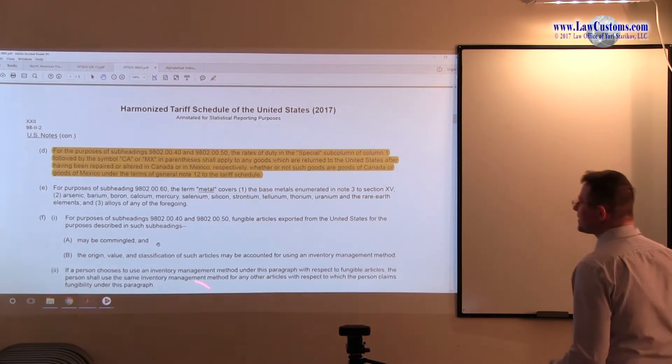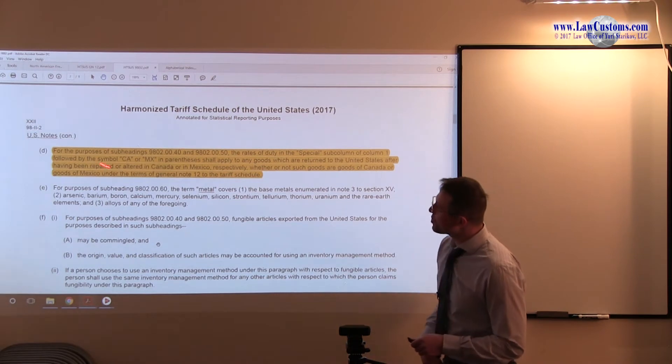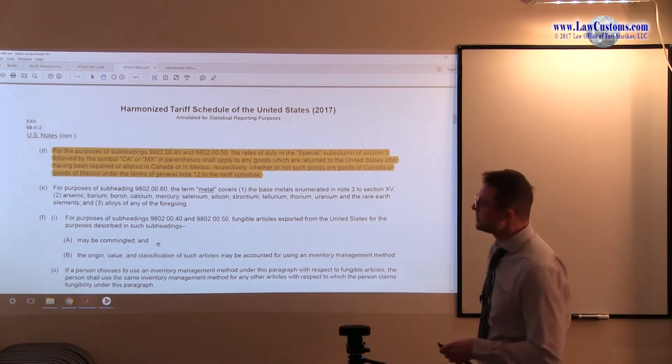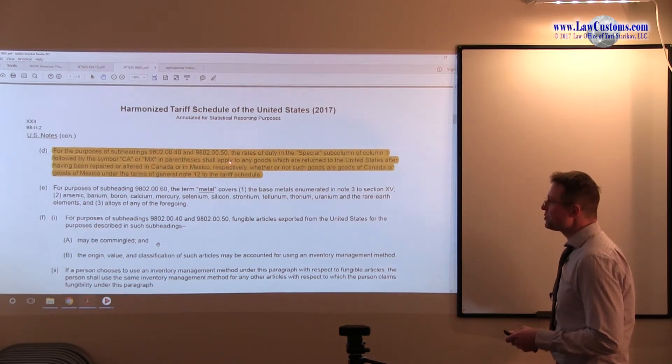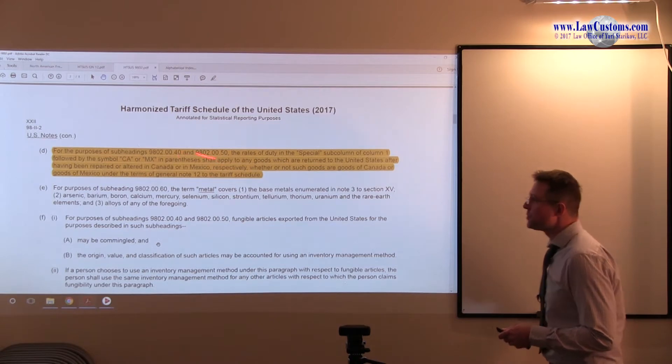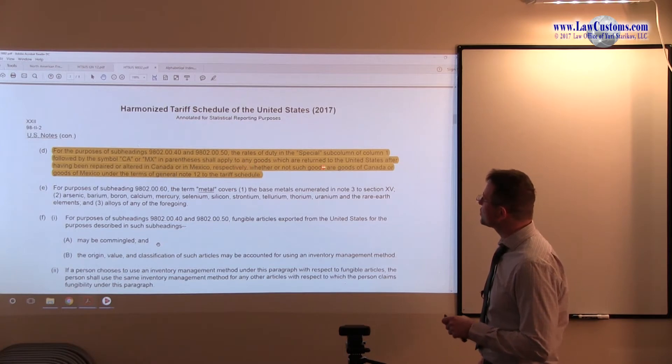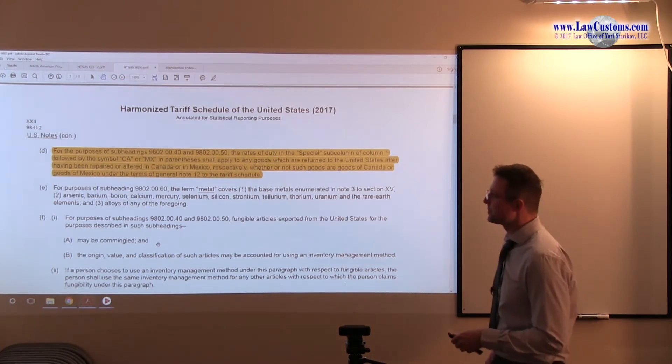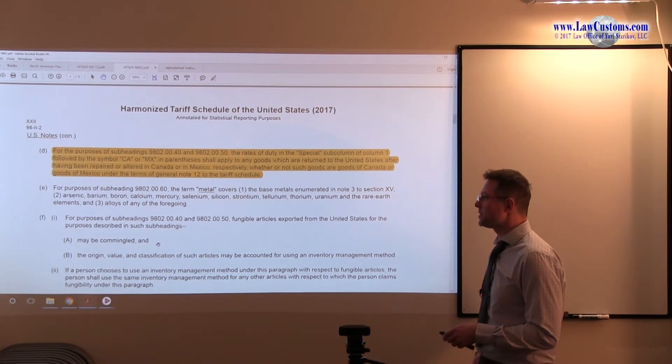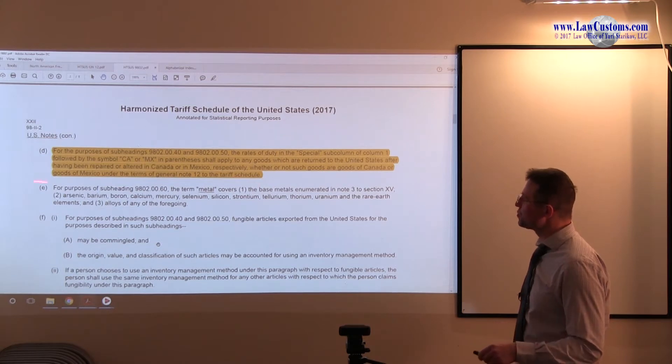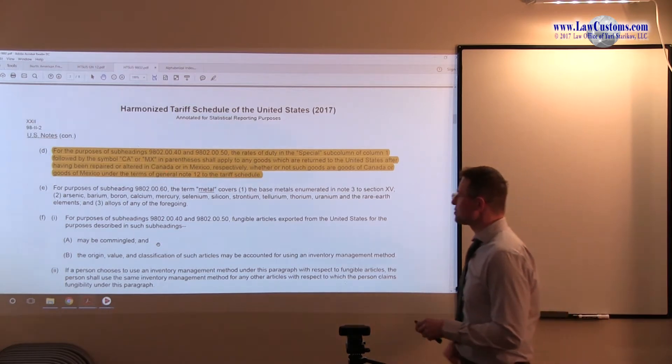And here is something interesting that we need to keep in mind. For the purpose, and this is note 3D, for the purposes of subheadings 9802 and 9804.00.3450, the rate of duty in a special subcolumn, followed by CA or Mexico in parenthesis, shall apply to any goods which are returned to the United States after having been repaired or altered. Repaired or altered is a term of art. We shall cover it in a bit later. In Canada or Mexico, whether or not such goods are goods of Canada or goods of Mexico under the terms of General Note 12 to the tariff schedule.